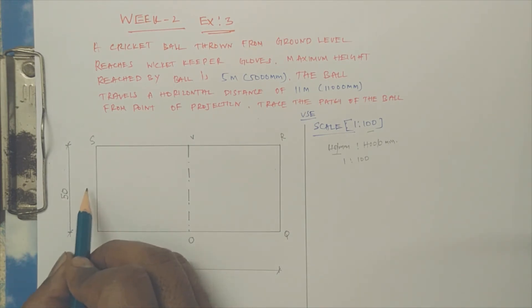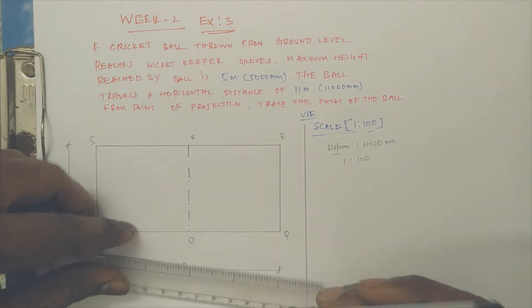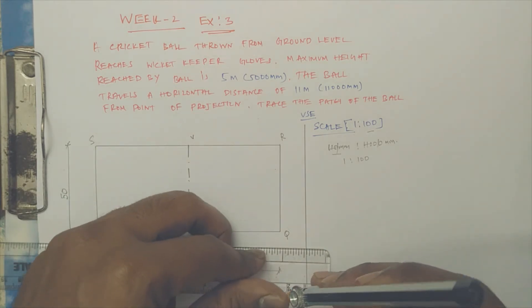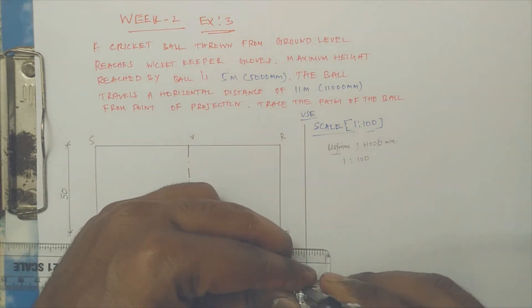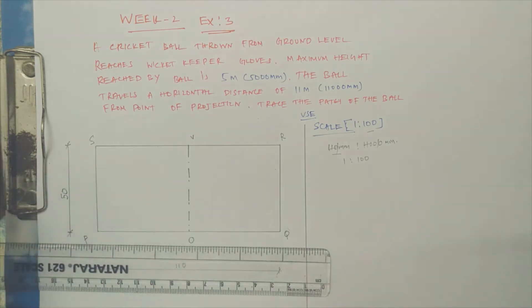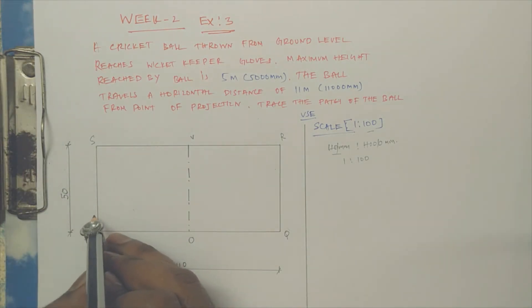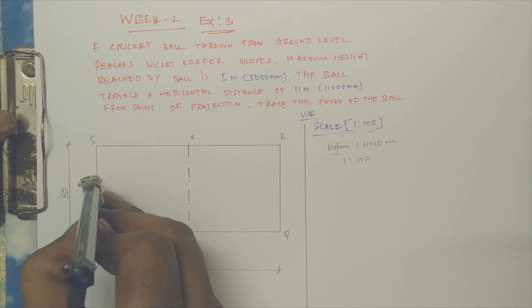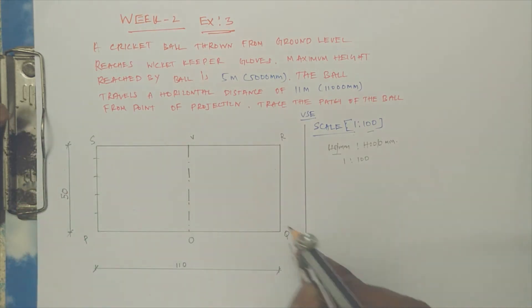Now I'm going to divide the part from O to P and O to Q, similarly P to S and Q to R. Let us divide this side—it's almost 55 mm and this side is almost 50 mm. Let us divide into five equal parts.